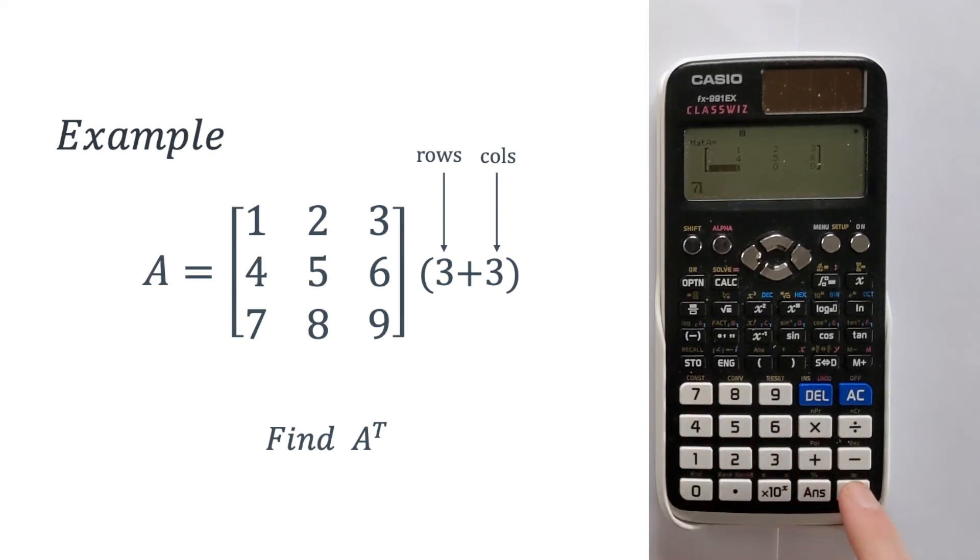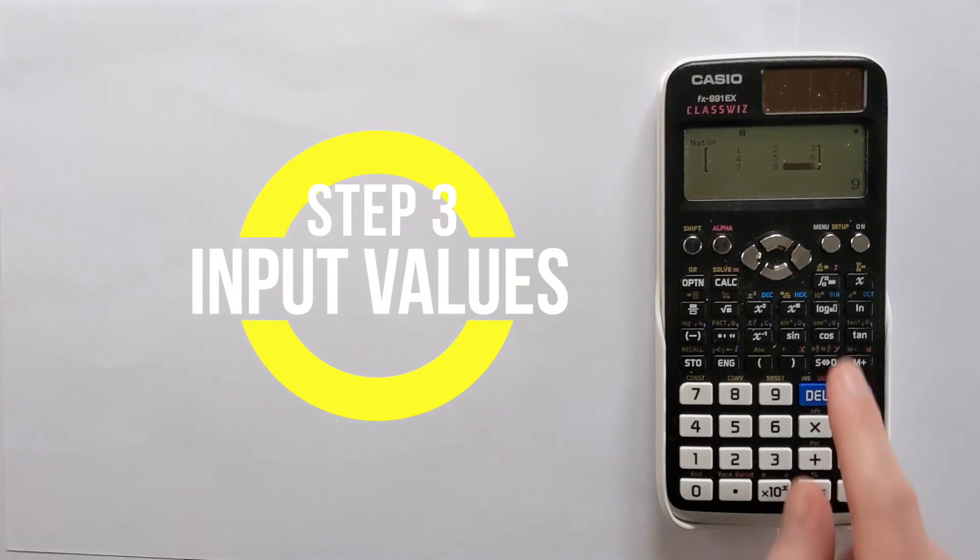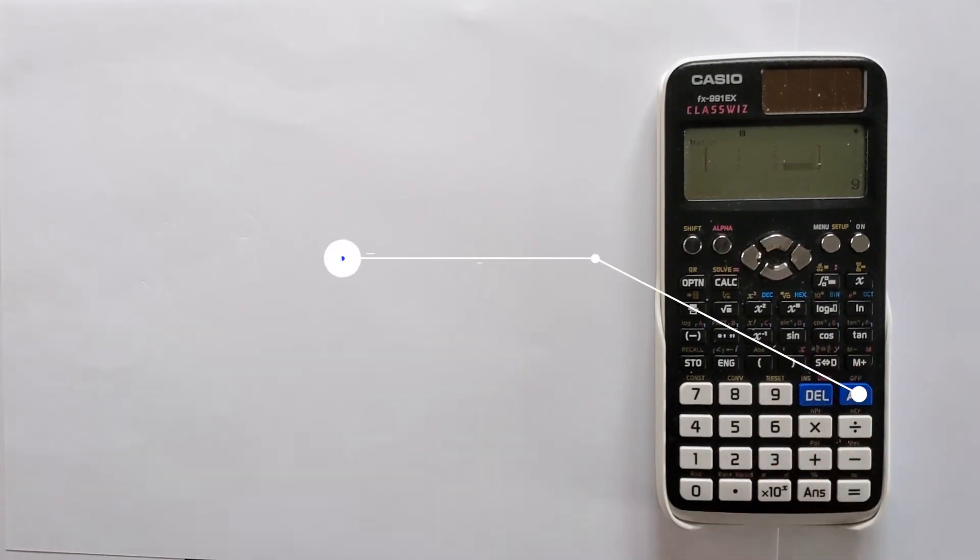If you want, you can use the arrow keys to navigate around the matrix and make any corrections that you need to. Once you've completely filled in the matrix you simply press the button AC and that's now in the calculator's memory.